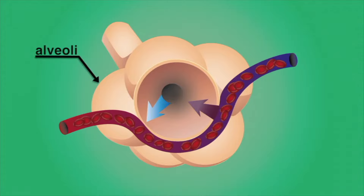Alveoli inflate during inhalation and deflate during exhalation. The partial pressure of oxygen, called the PO2, in the air in the alveoli is greater than the PO2 in the blood. As a result, the oxygen diffuses into red blood cells from the air in the alveoli.